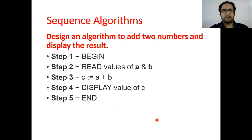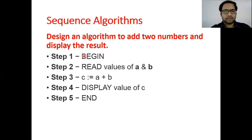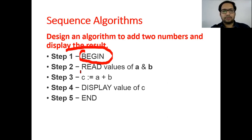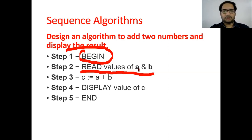Now moving to the first type of algorithm, which is the sequential algorithm. The problem statement is: design an algorithm to add two numbers and display the result. The input will be two numbers, then we apply the addition process, and the sum will be our result. In step one, we write 'begin'. In step two, we write 'read values of A and B'. We need to mention variable names so we can identify which variable stores which value.